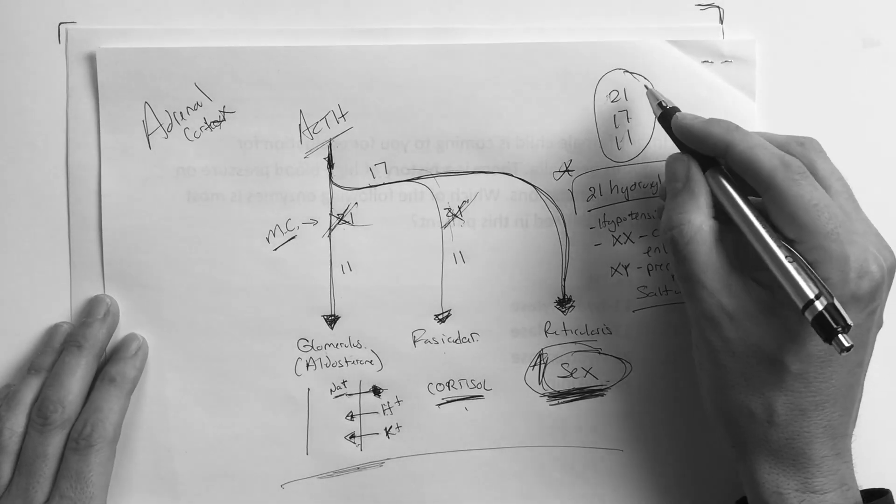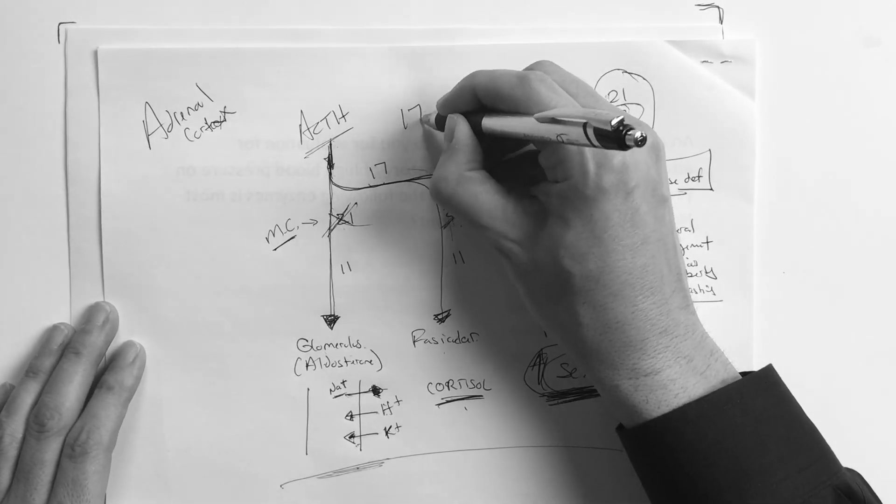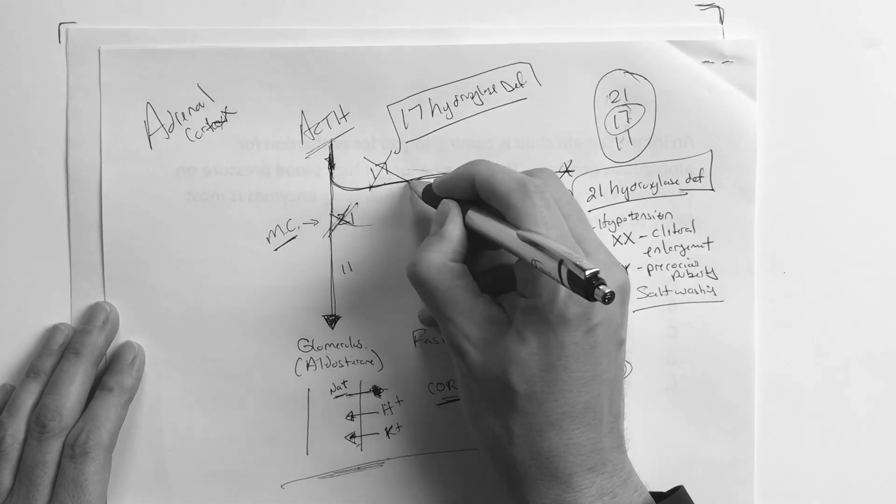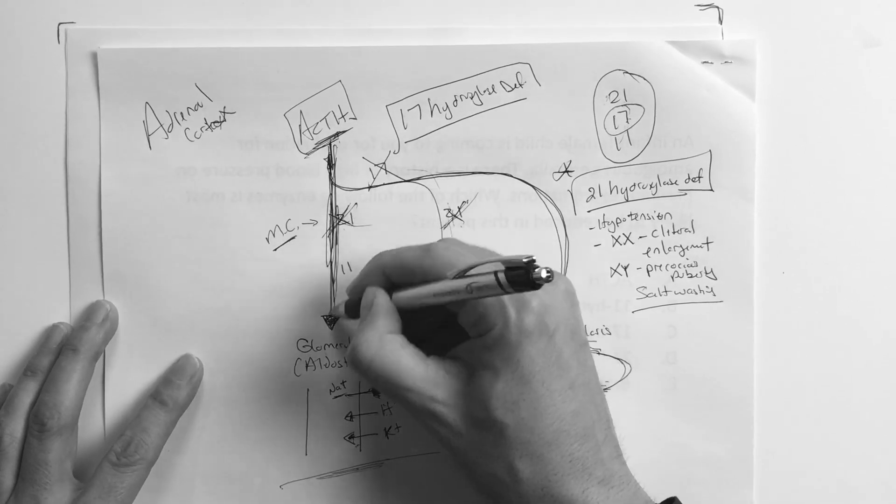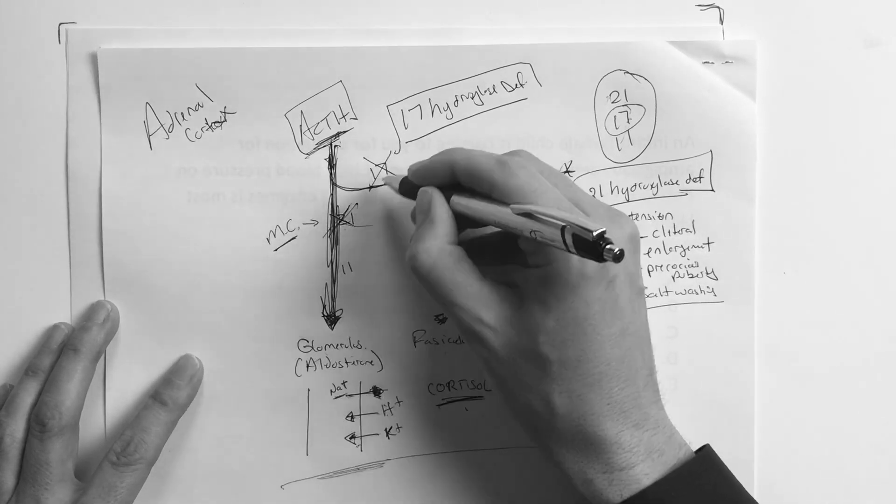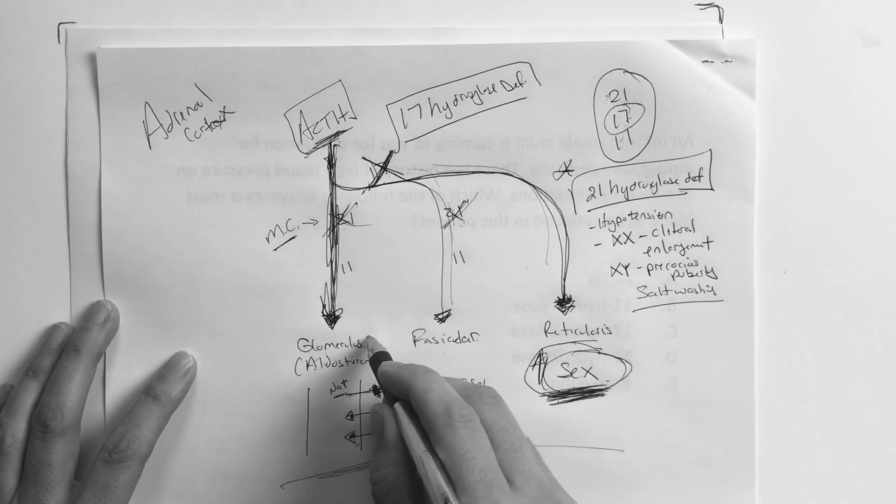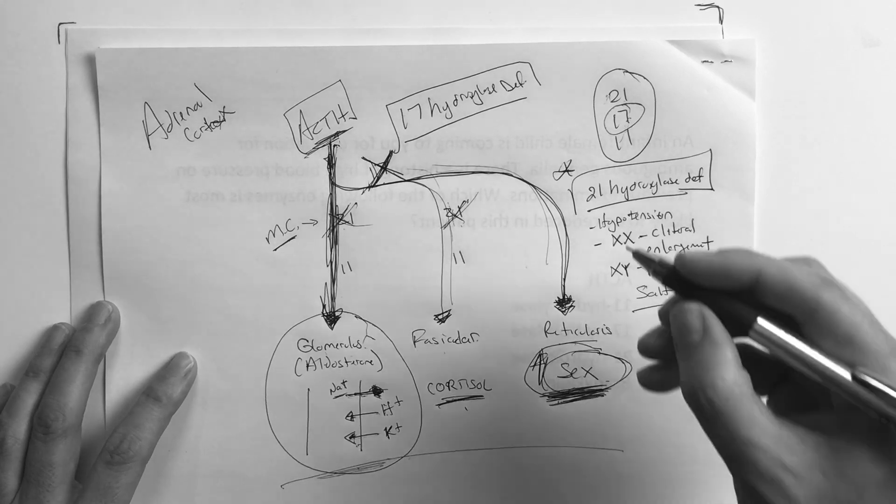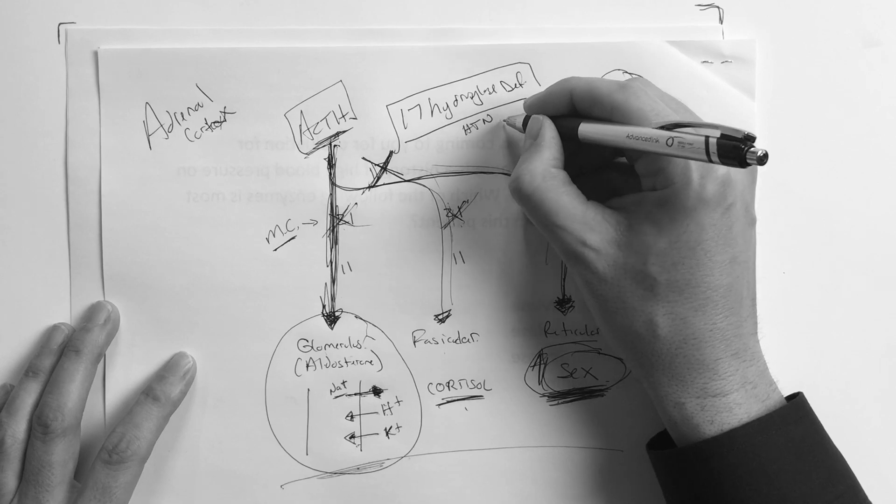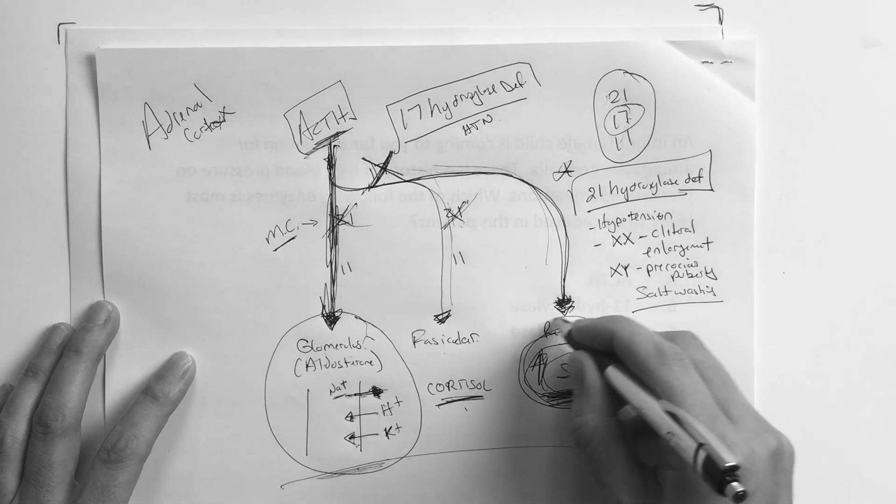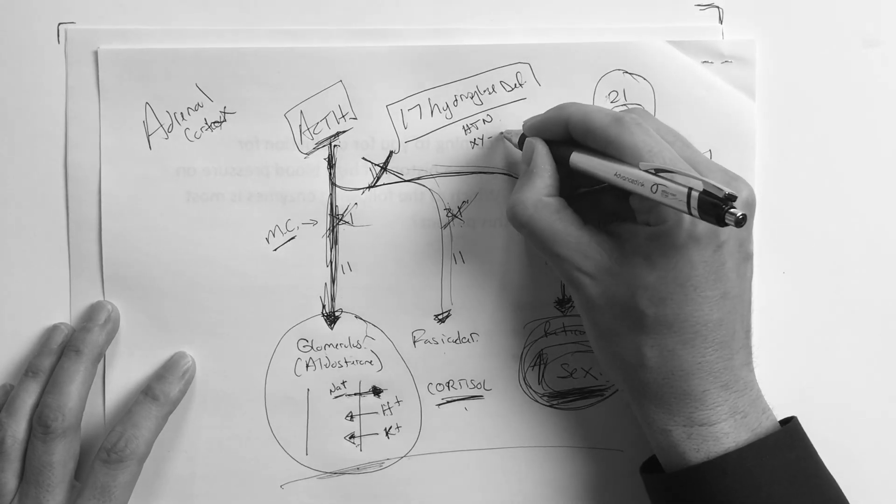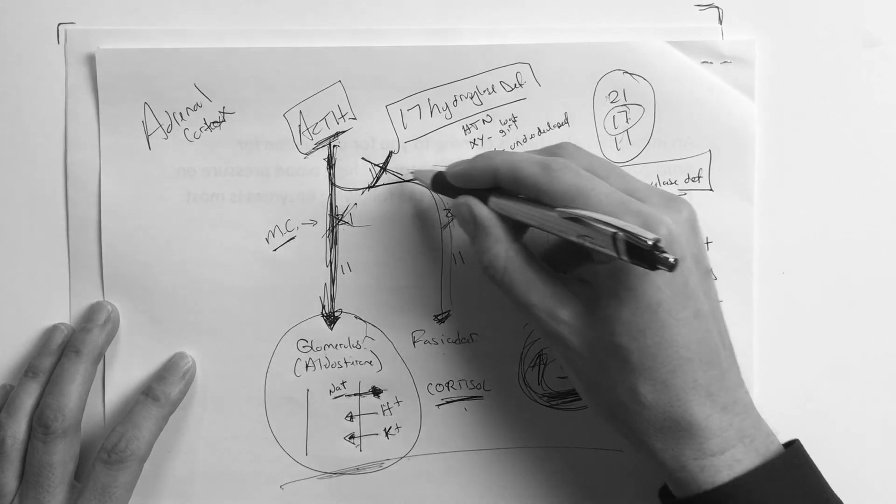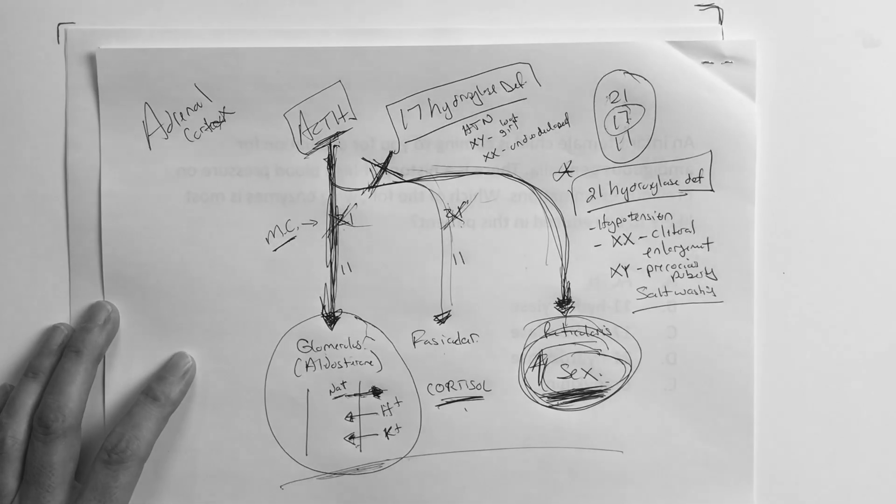But now let's think about this. What happens when the 17 gets knocked out? Let's go 17 hydroxylase deficiency. Let's just see what happens there. If this gets knocked out, where does all the ACTH go? Straight down. It doesn't go over here. It goes straight down because he can't pass that step right there. So what happens if you get a bunch of this? Well, you're going to get a bunch of sodium reabsorption. And so you're going to have hypertension because of the increased sodium. You're not going to get any androgens, you're not getting any of the sex hormones. So if you're the boy, you kind of look like a girl. And then if you're the girl, you're just underdeveloped, because it wasn't allowed to go this way. It was knocked out right at the 17.